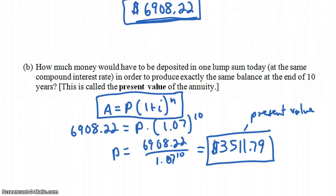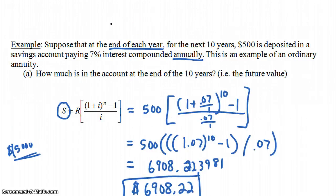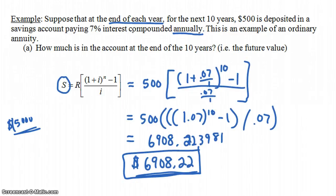So we'll have a present value formula and won't need to do it as a two-step process. The key idea is: the present value of an annuity is how much you'd need to put in right now so that the money grows to be the same amount as if you had done the annuity over time.